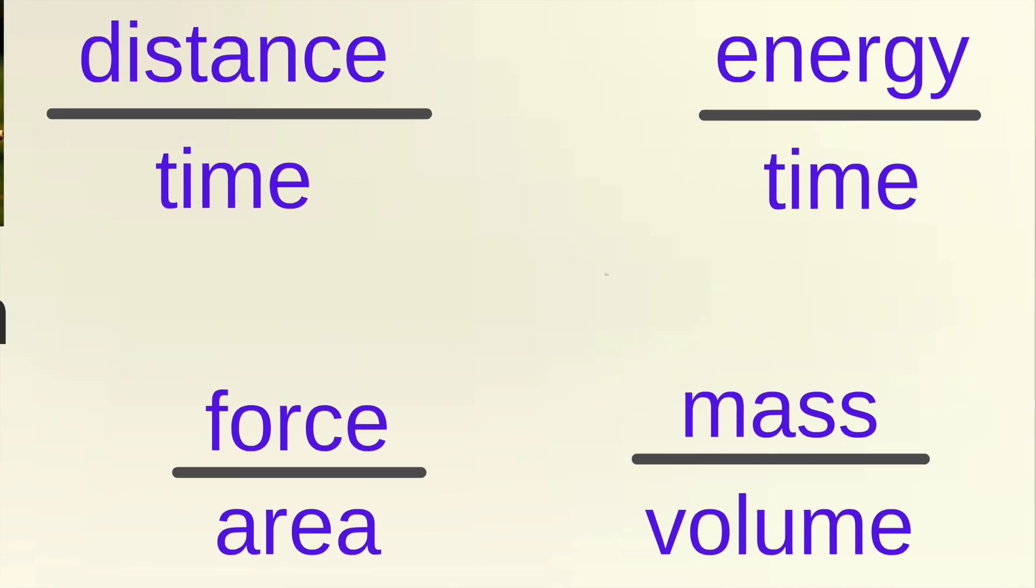Now, you might have gotten the point that many units in science are one unit per another unit, or a ratio. And there are many more examples that follow this pattern. This is why it's so important to understand ratios and really what they mean in order to understand what you're doing in science.